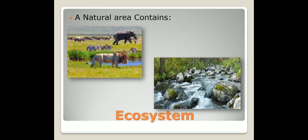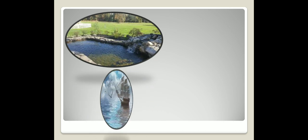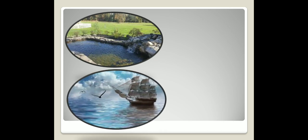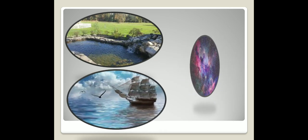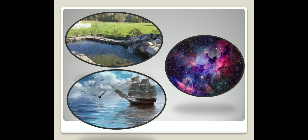The ecosystem can be in three sizes or three types according to its size. The small ecosystem is like water ponds and lakes. The large ecosystem is like seas and oceans, and the very large ecosystem is the universe.